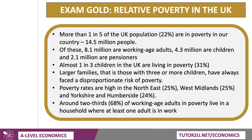But the scale and depth of poverty in the UK is essentially undeniable. According to the latest data from the Joseph Rowntree Foundation, more than one person in five of the UK population is in poverty — 14.5 million people, of which 8 million are working-age adults, over 4 million are children, and 2 million are pensioners.